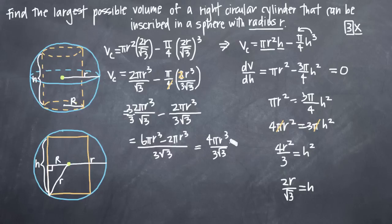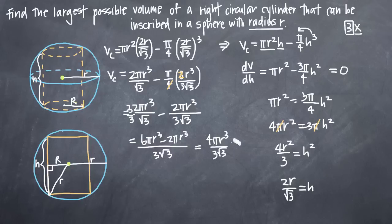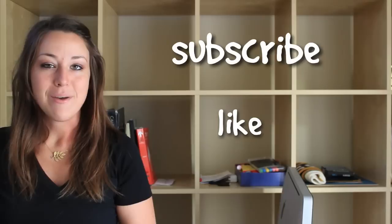That's the largest possible volume of the right circular cylinder that can be inscribed in a sphere with radius r — 4 pi r cubed over 3 root 3. This formula lets us immediately find the largest possible volume for any given radius. For example, if the radius of the sphere is 2, plugging in gives 32 pi divided by 3 root 3 as the largest possible volume. I hope you found that video helpful — please like and subscribe to be notified of future videos.